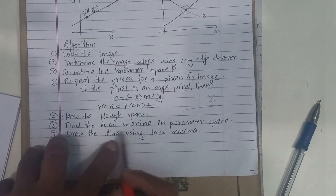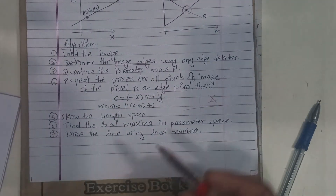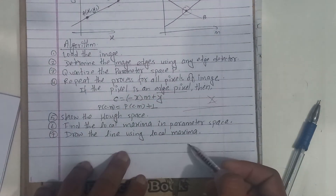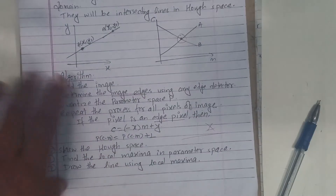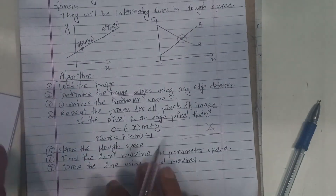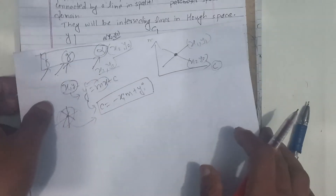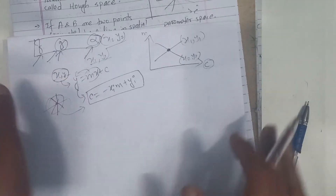Find the local maxima in the parameter space and draw the line using those local maxima. This is the Hough Transform — it is a global method. Edge detection is followed by edge linking using this approach.